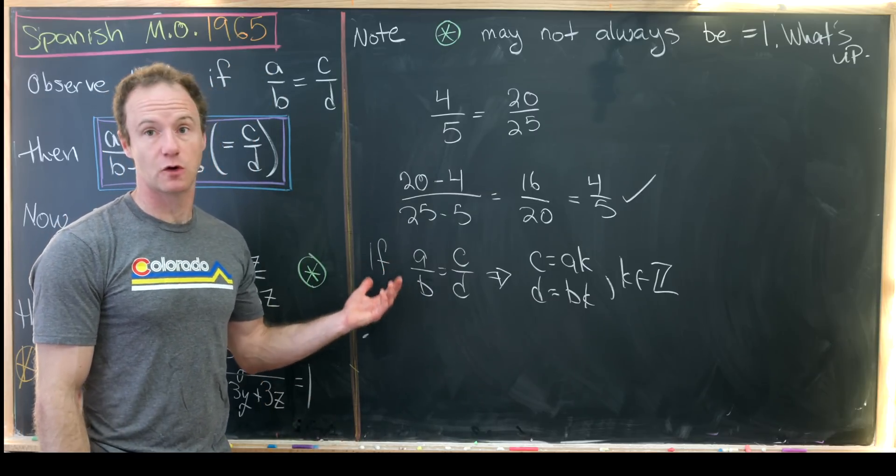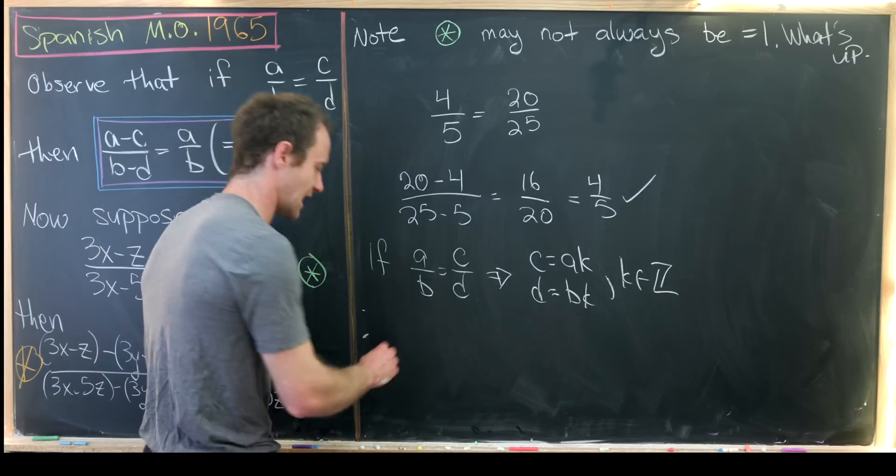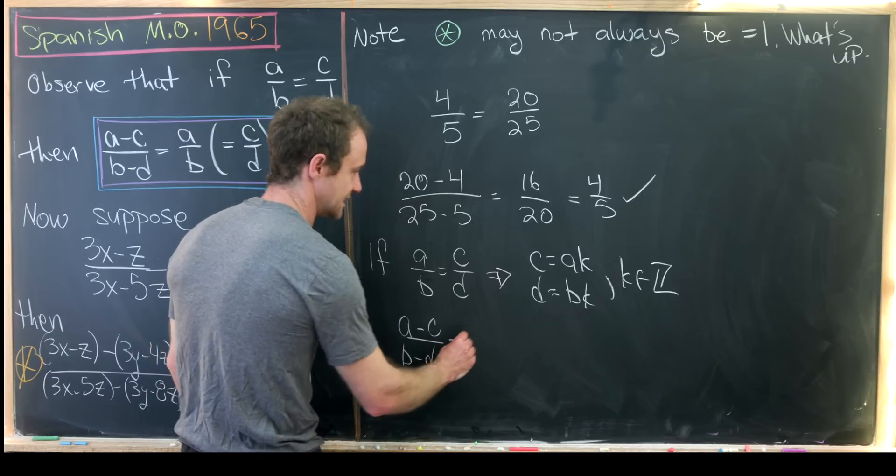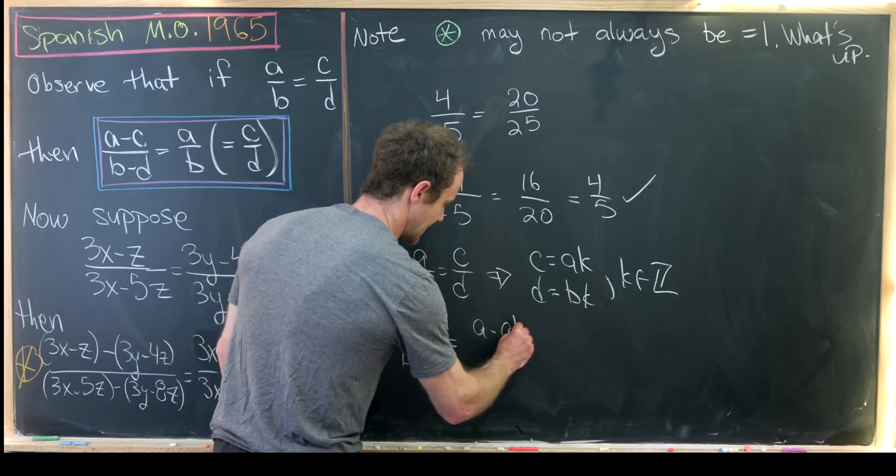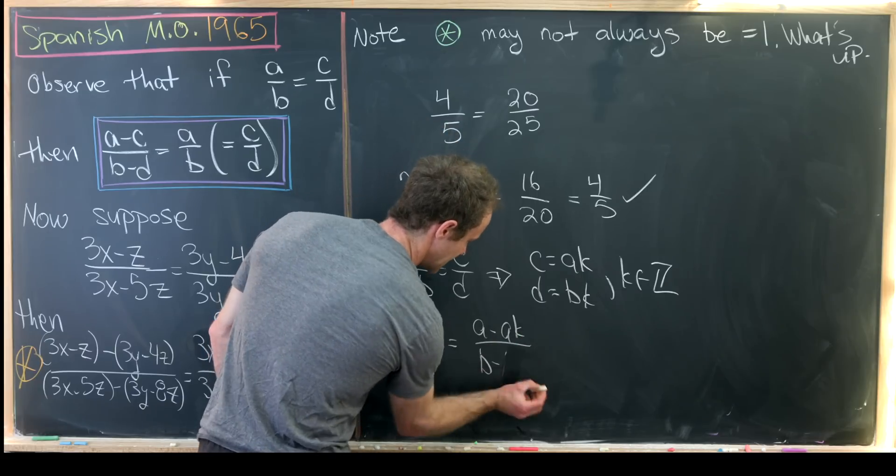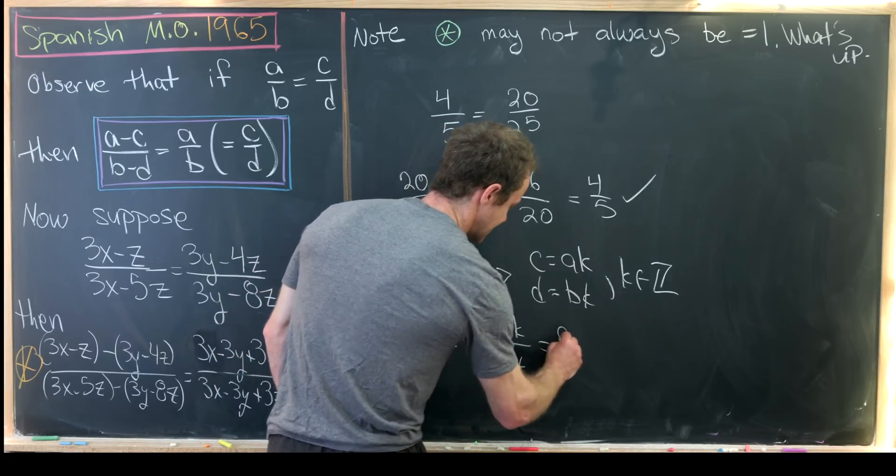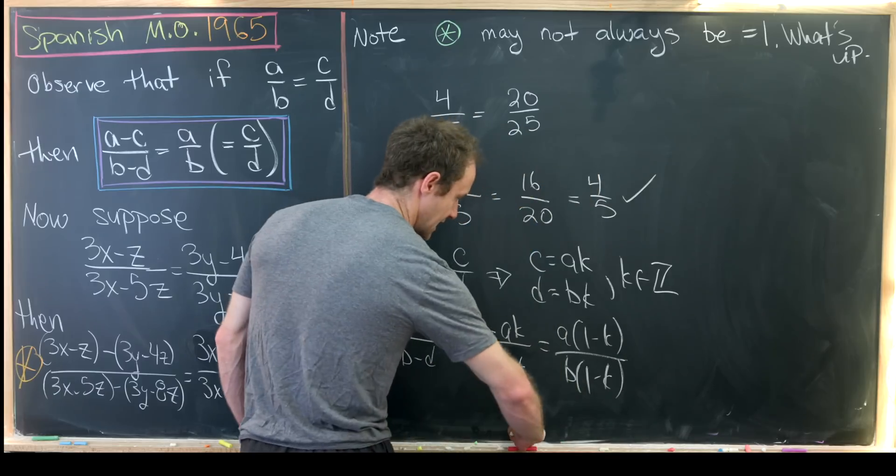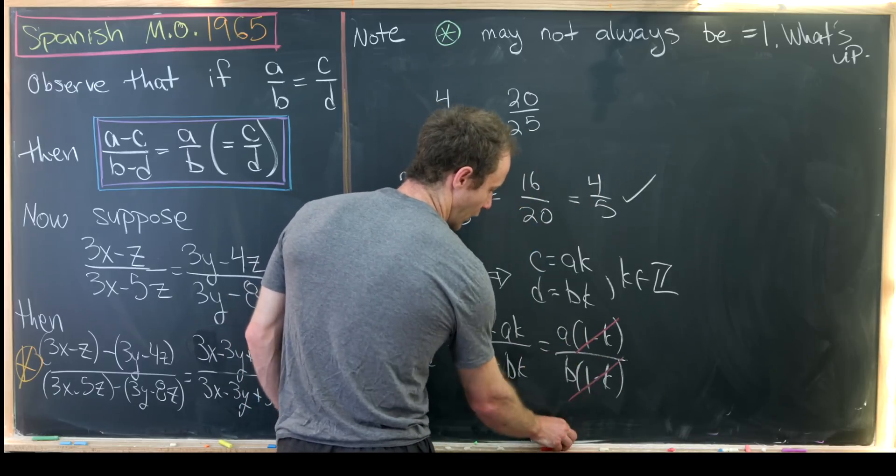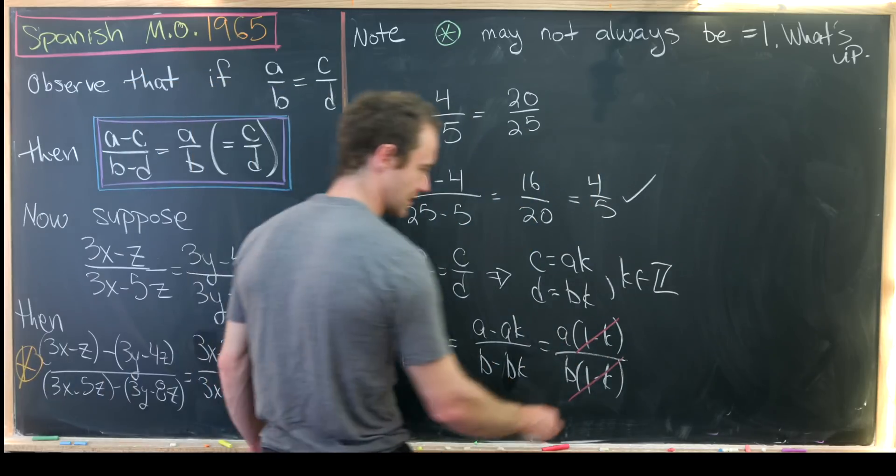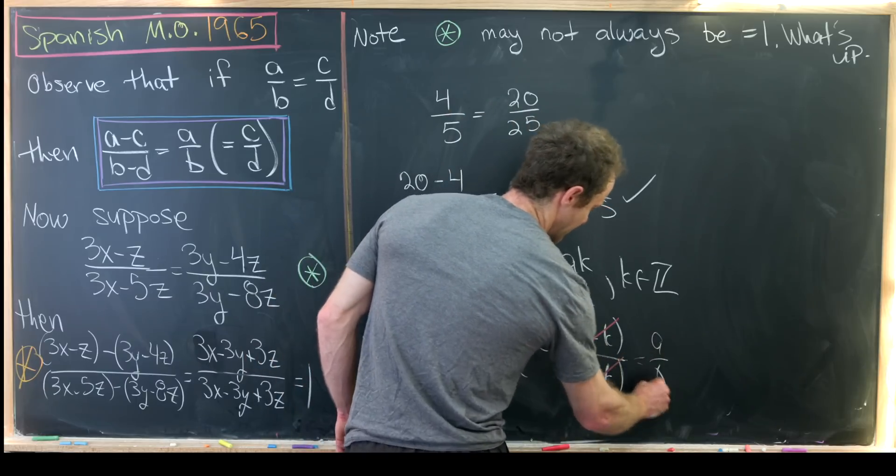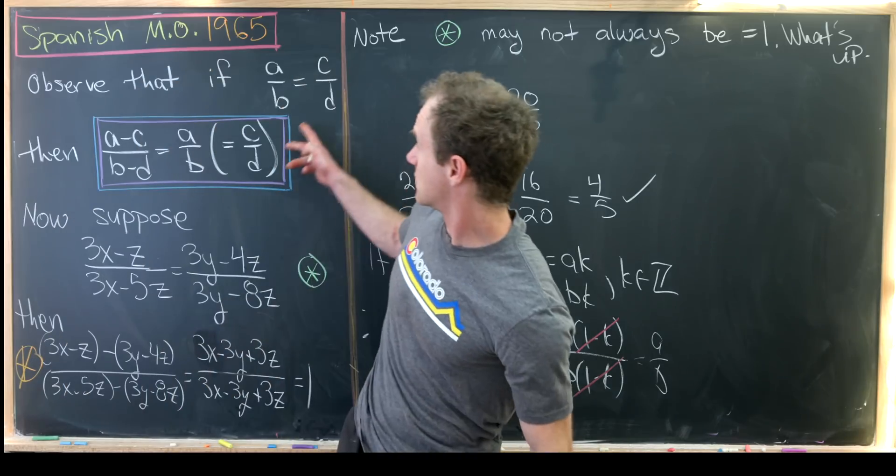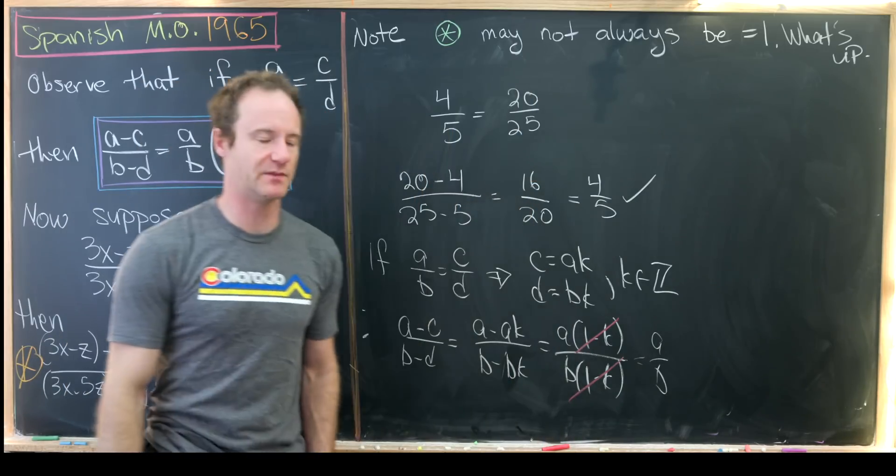Now let's look at the quotient of the difference of the numerators and the difference of the denominators. So our new fraction, A minus C over B minus D is equal to A minus AK over B minus BK, which is A times 1 minus K over B times 1 minus K. And in this case, we can see that the 1 minus K cancels in the numerator and the denominator, and we get A over B, which is the same thing as our original fraction. So that maybe quote unquote proves this phenomenon up here.